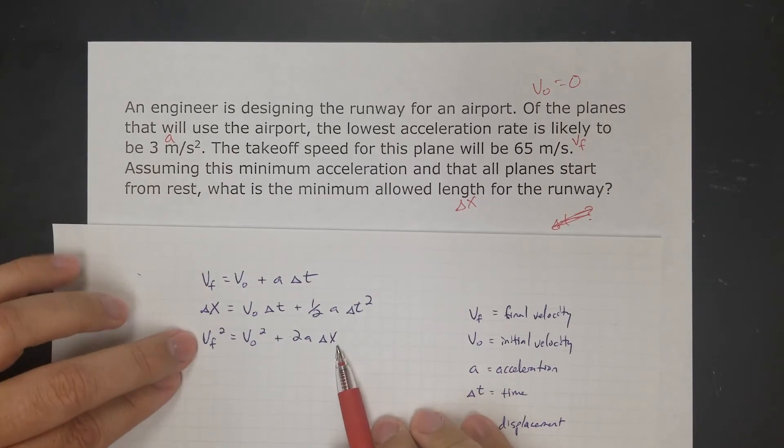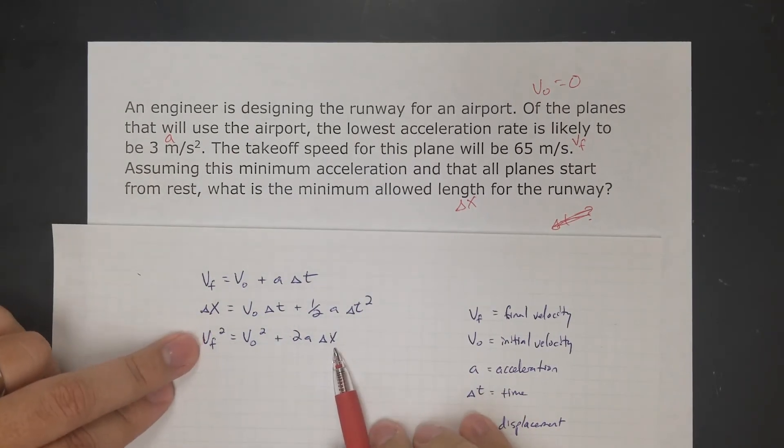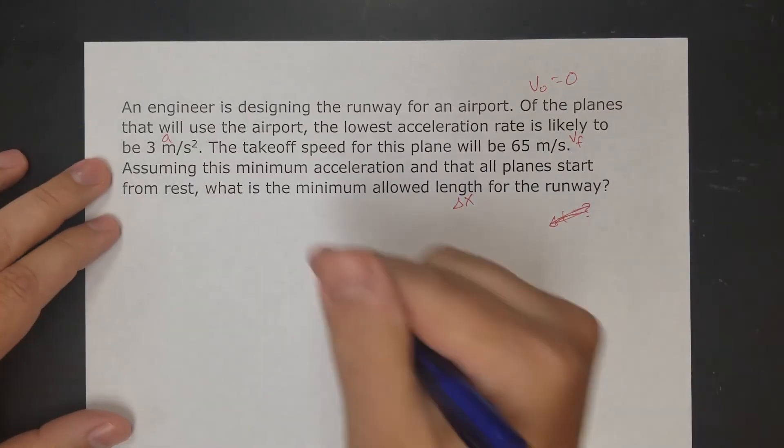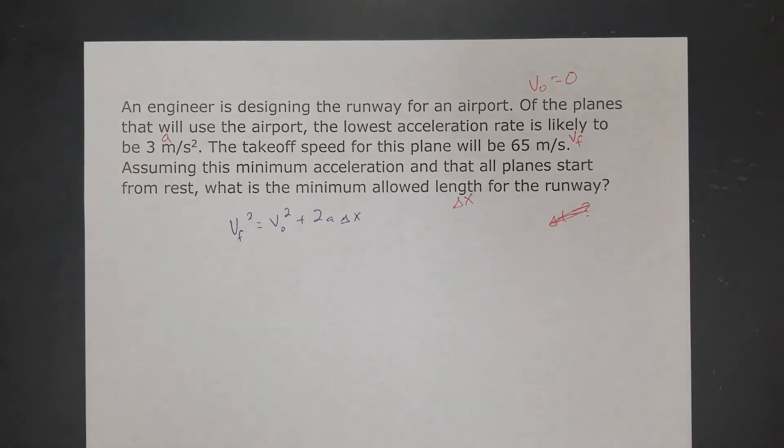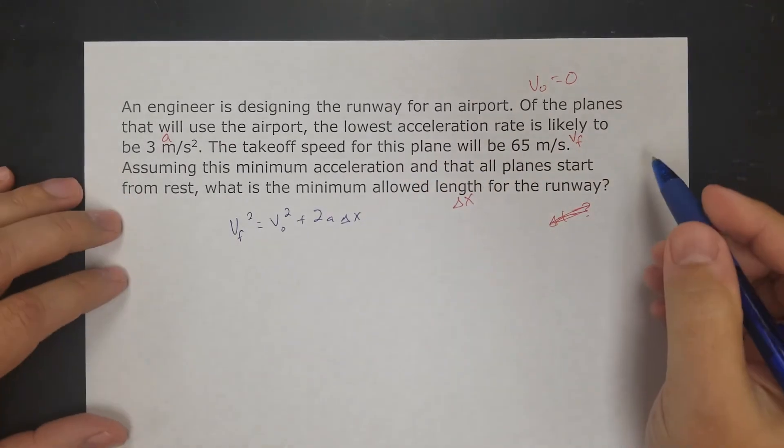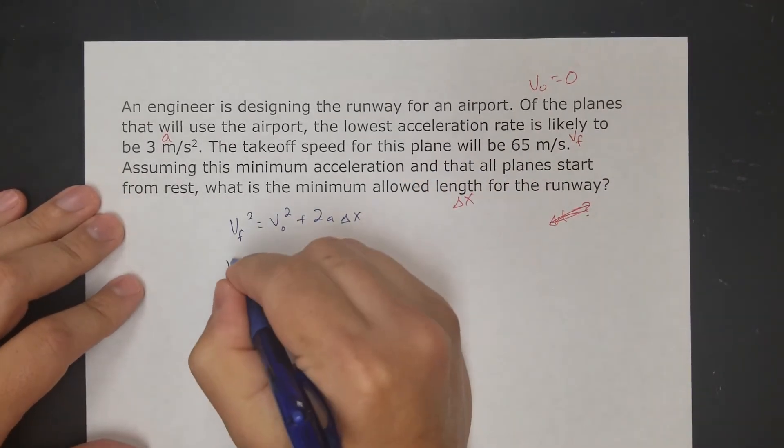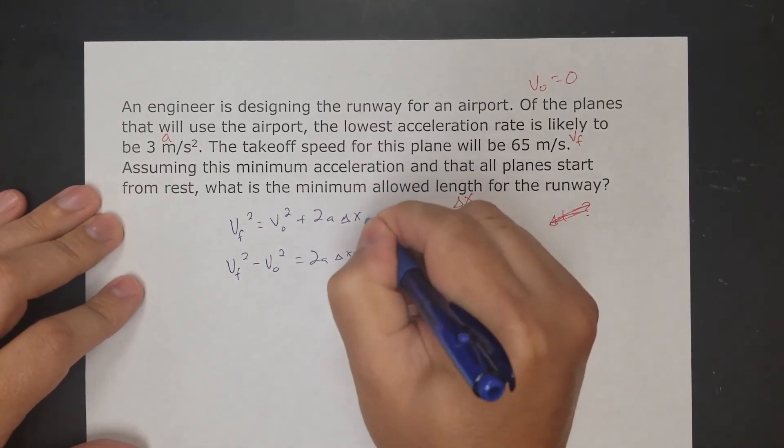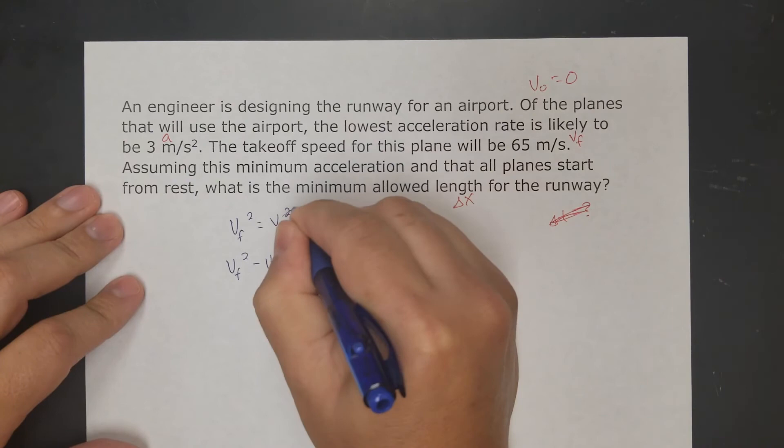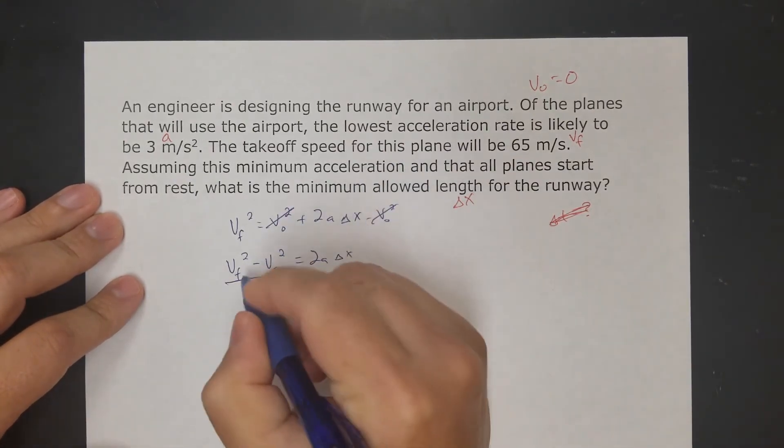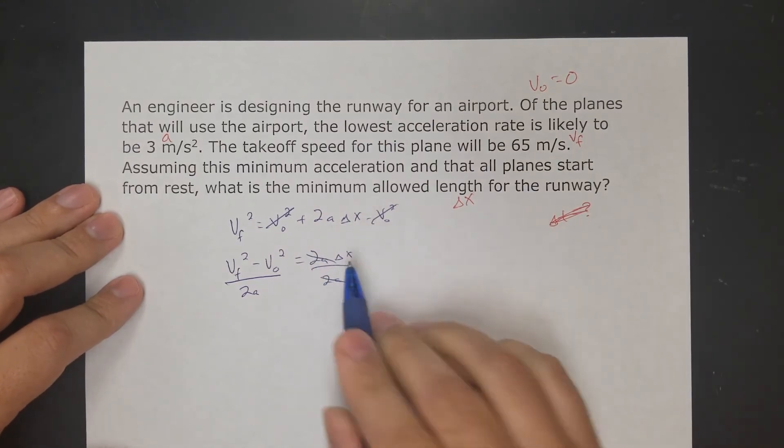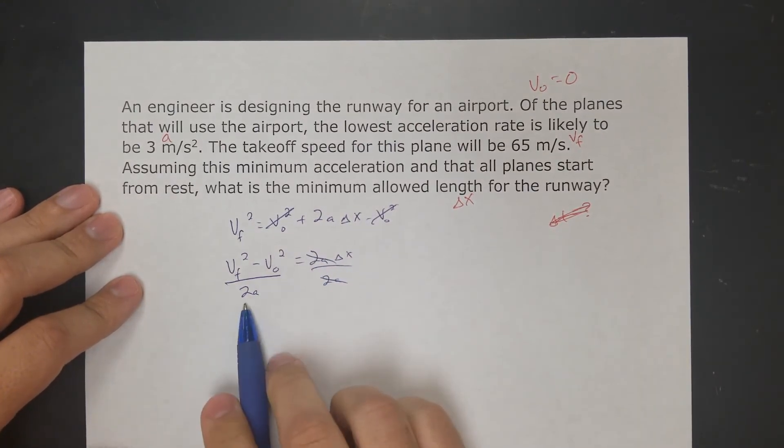Let's look at my equations. Time interval, time interval. This third one, no time interval. So I can use my third equation. I want delta x. Before I plug numbers in, let me do the algebra. I'm going to subtract V_0 squared to get 2a delta x. Minus V_0 squared gets rid of that. Then I'm going to divide by 2a. That's going to get rid of that, and that will give me delta x. So it's V_f squared minus V_0 squared over 2a. Let's plug in our numbers and solve.